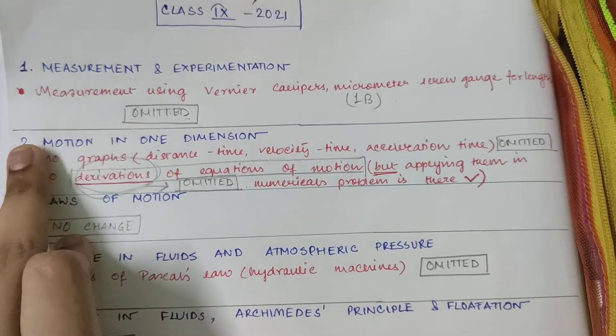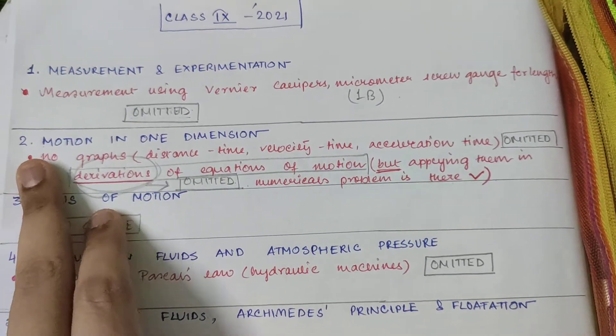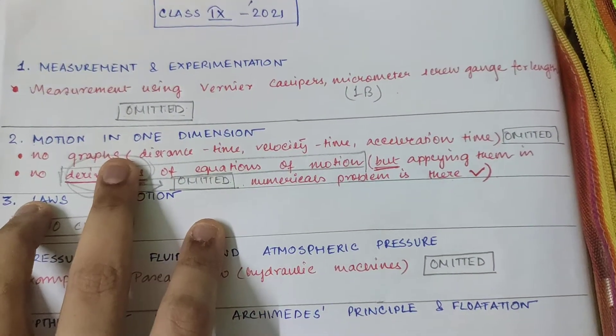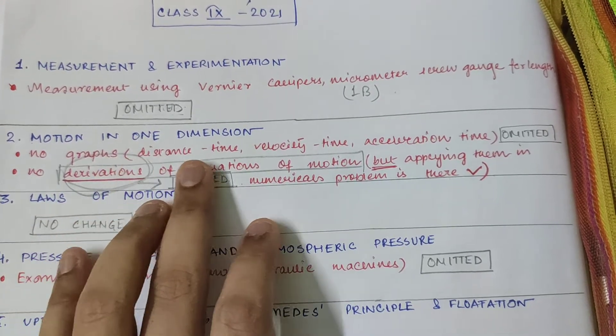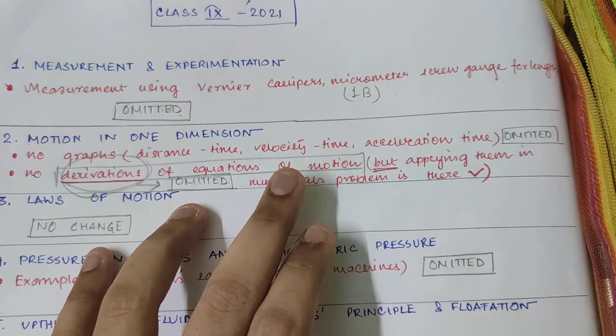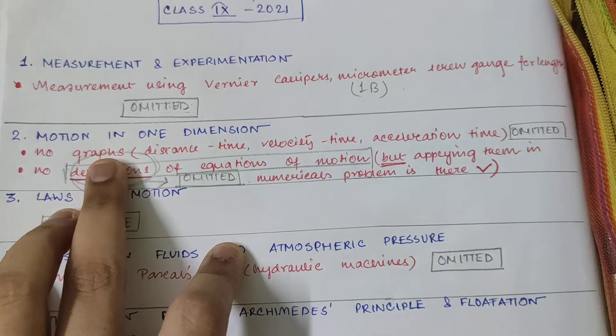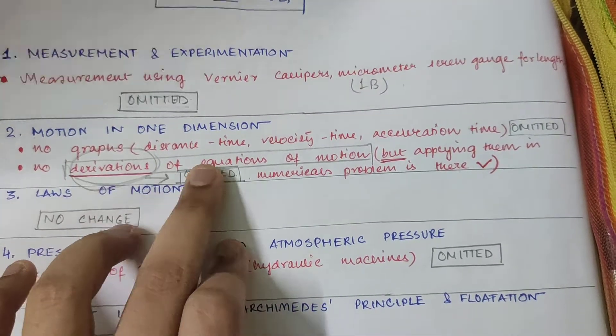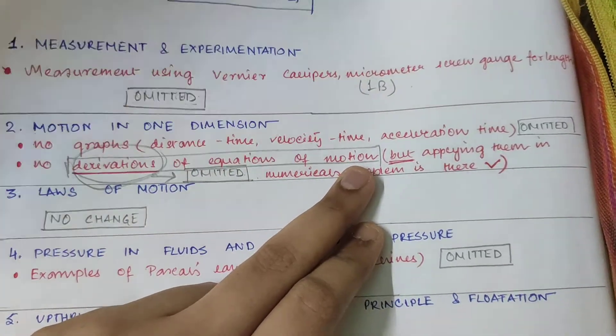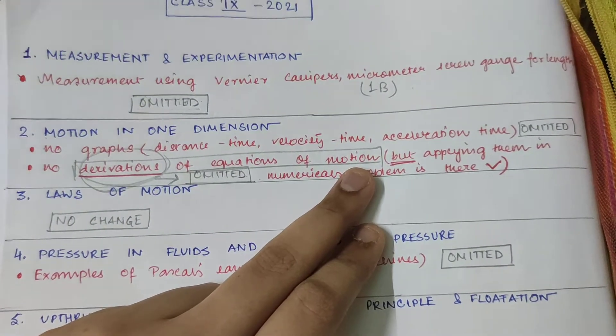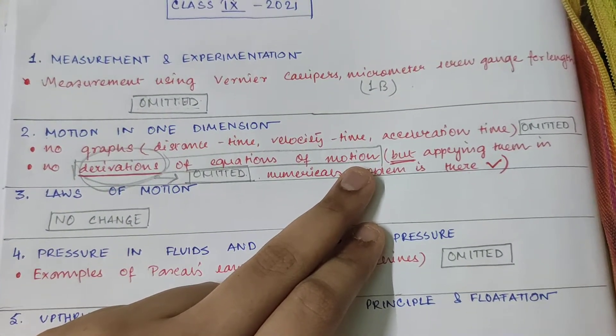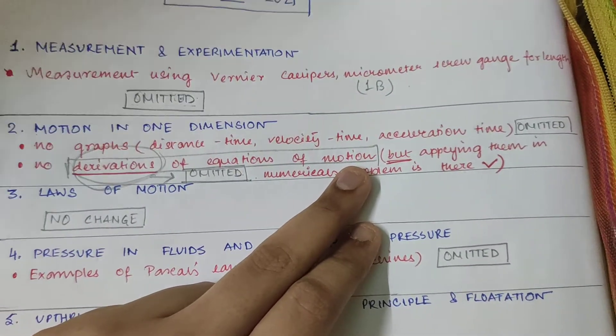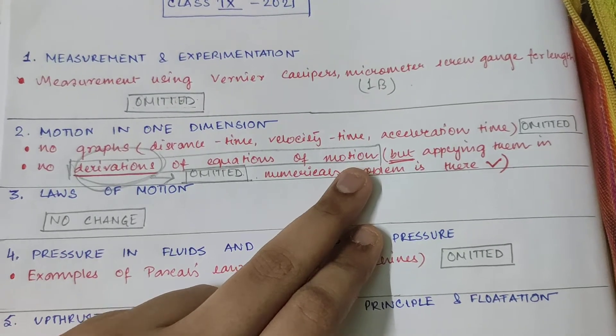Next come to the second portion, motion in one dimension. From here they have omitted the graphs - that means the distance time, velocity time, acceleration time graphs. They have omitted the graphs. You won't have the graph section in this syllabus. Also they have omitted the derivations of equation of motion. Do you remember we have done that from 2C, we have done the derivations of equation of motion, three equations of motion we have done. And we have done the derivations by graphical method and alternate approach. This time you won't have the derivations.